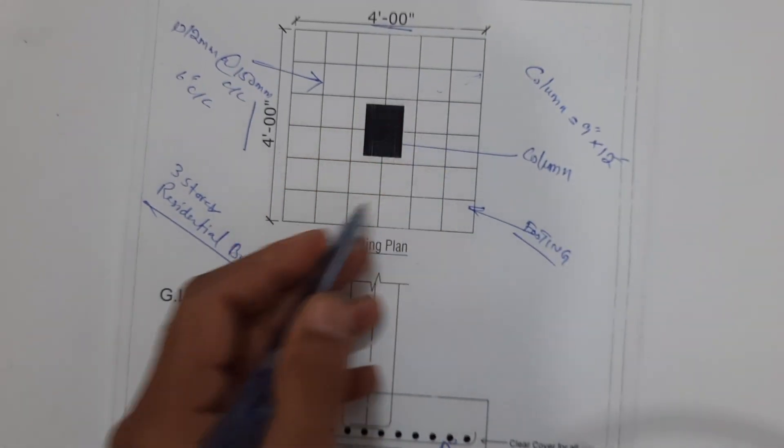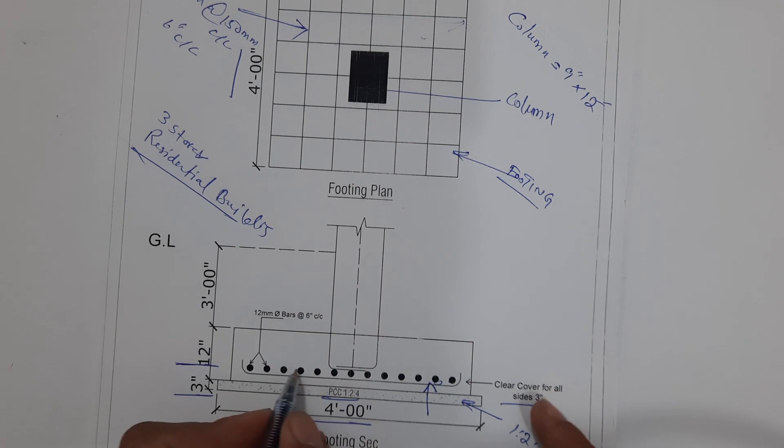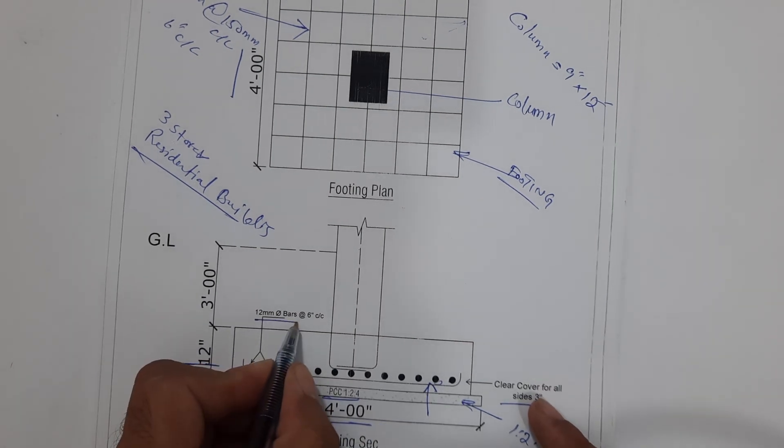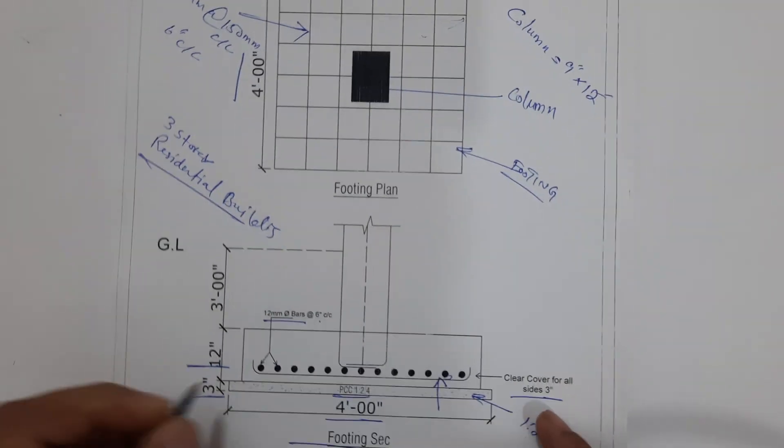As you can see in the plan, we have the diameter 12 millimeter bar with the spacing of 6 inches, as I already discussed. Next, you can see the bed depth is 12 inches.